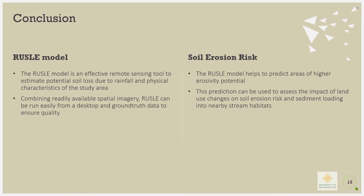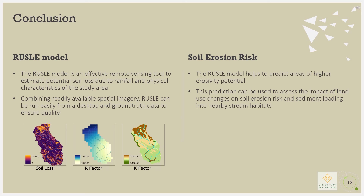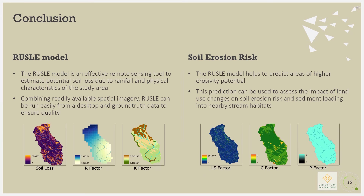Using readily available spatial imagery, the RUSLE model has shown to be successful in predicting areas of high soil erosivity within the Redwood Creek watershed. As you can see, some areas are affected by certain factors more than others. The northern part of the watershed is greatly affected by all the factors, while the southern portion is more affected by the LS and C factors. This shows how slope length, steepness, and land cover have a great influence on erosion rates in this area. Identifying these areas is important to help land and restoration managers determine the best management actions to reduce sediment loading to Redwood Creek and protect the threatened salmon species.